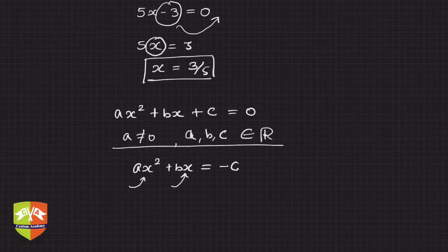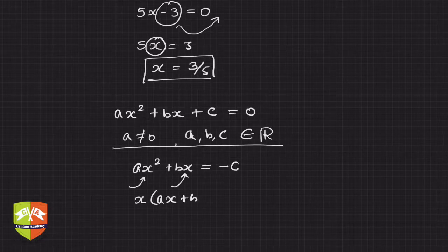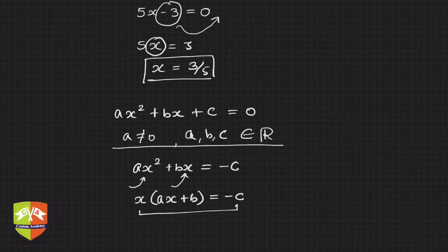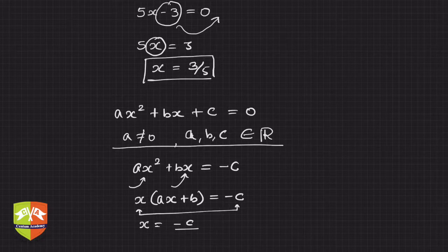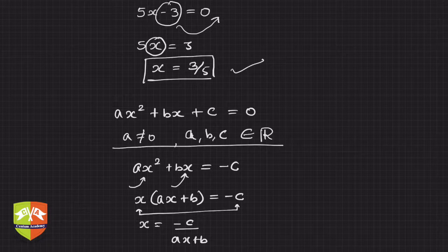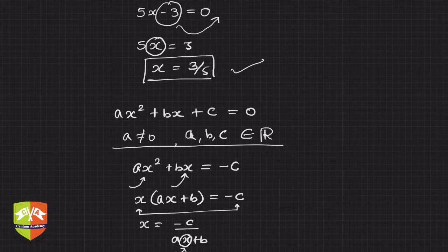How do we find the value of x? At most, you can take x out as a common factor: x(ax + b) = -c. But this is very difficult — if you isolate x, you get x = -c / (ax + b), which still has an x term on the right hand side. So we will not be able to find the value of x because the solution itself carries a variable.